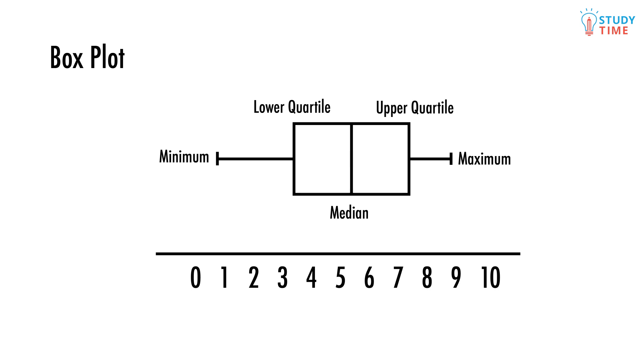The sides of the box show the lower and upper quartile values. The lines coming off the left and right of the box show the range, with each of them pointing to the maximum and minimum values.